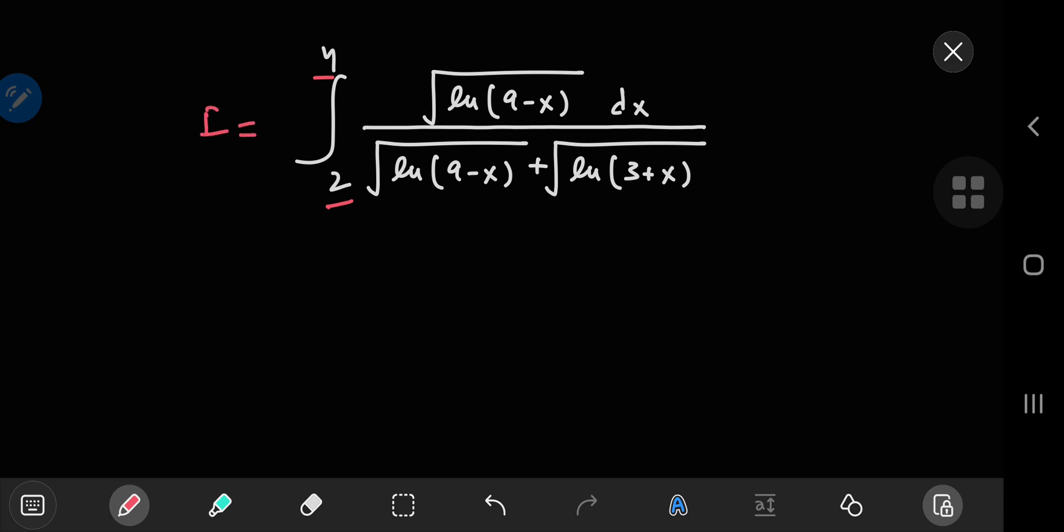Now if I call this integral i, then I can make use of a property of the definite integral that if I'm integrating from a to b some function f of x with respect to x, then the integral is equal to the integral from a to b of the same function with x being replaced by a plus b minus x.